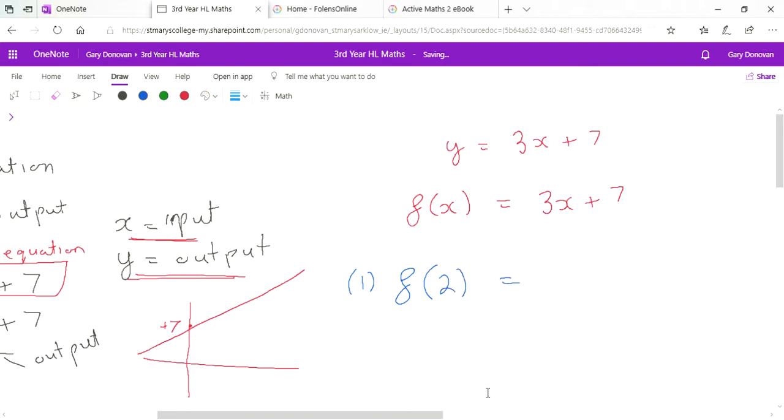They might ask, what's f of 2? If you're looking for f of 2, what they're saying is they want you to make your input value, which is x, equal 2. When you put this into your equation, it's 3 times 2 plus 7, so f of 2 equals 13. Here's your input and here's your output.